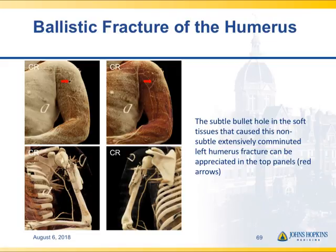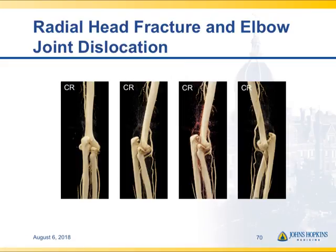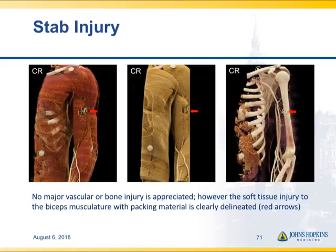You can see the artifact, but there's no significant vascular injury from the bullet, with the axillary to brachial artery and brachial to radial and ulnar artery all intact. In a patient with radial head fracture and elbow dislocation, 3D mapping shows intact vessels as well as the orientation of the fracture and its multiple fragments. With a stab injury, showing both the underlying vessels as well as soft tissue and bone really gives you a very good feel for what's going on.